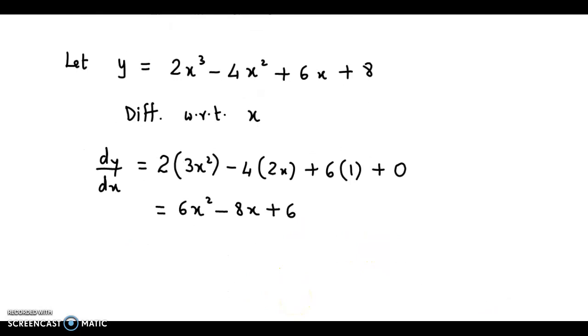We could take out 2 as the common factor, so we take 2 as the common factor, we have 3x square minus 4x plus 3 within the brackets. This is the value for dy by dx.